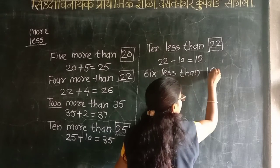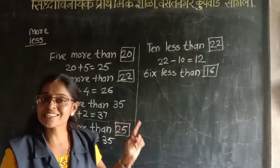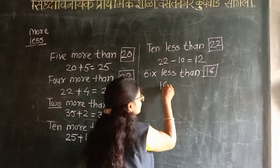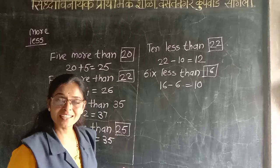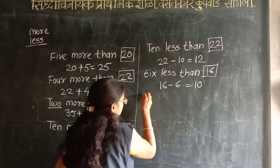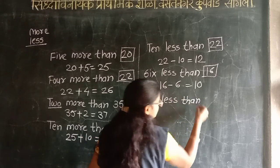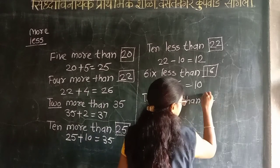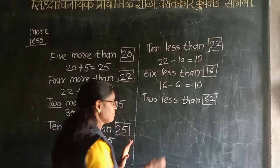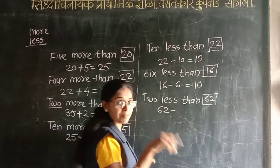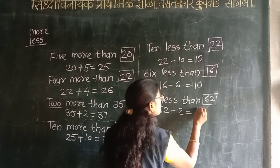16. 6 less than 16 — pekshah saha kami means kiti? 16 minus 6 equal to 10. OK. Next: 2 less than 62. 62 pekshah douni kami — means 62 minus 2. Kiti? 60.